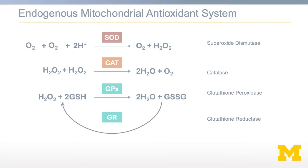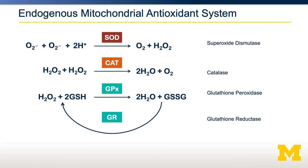Interestingly, these molecules contain several micronutrients that we've not yet discussed. For example, one isoform of superoxide dismutase requires manganese as a cofactor, and glutathione peroxidase requires selenium as a cofactor. Therefore, if you're deficient in selenium or manganese in your diet, over time that could affect the ability of superoxide dismutase or glutathione peroxidase to effectively reduce oxidants. That's one reason why sometimes people refer to selenium as an antioxidant.